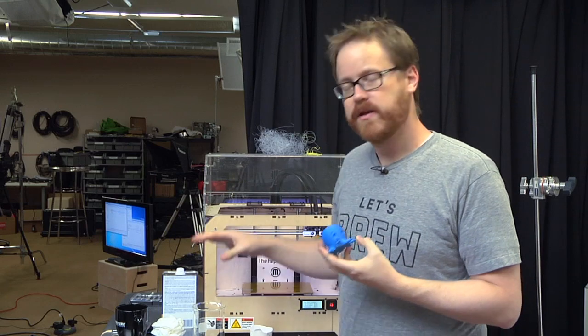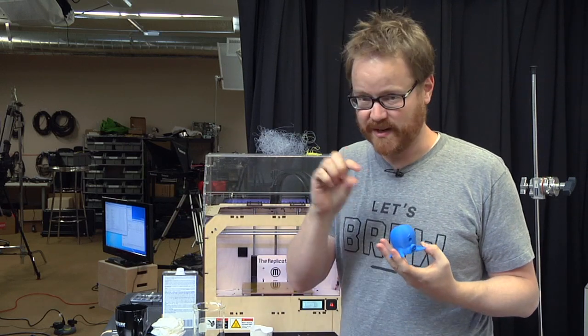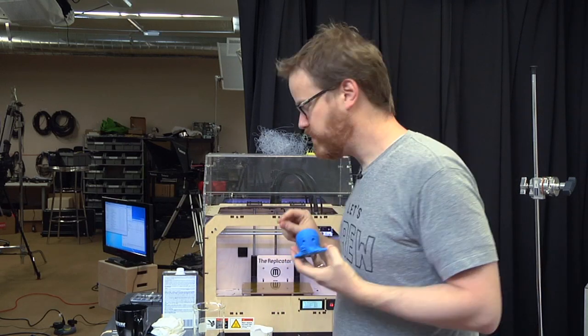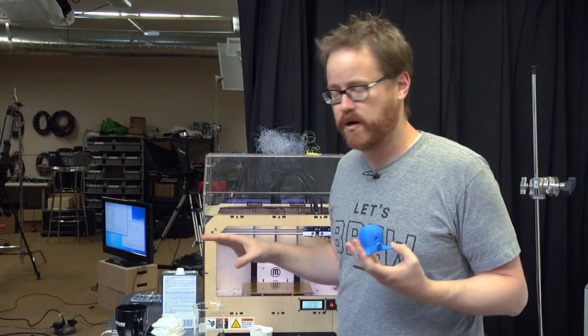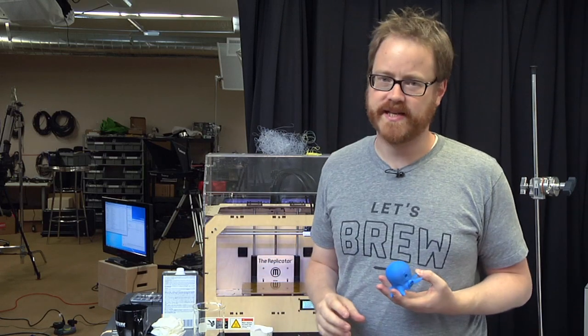Now the way this works is really straightforward. You put a model into a jar, you suspend the model a couple of millimeters off the bottom of the jar, and then you put a couple of drops of acetone in that jar and heat it up to about 90 degrees Celsius.